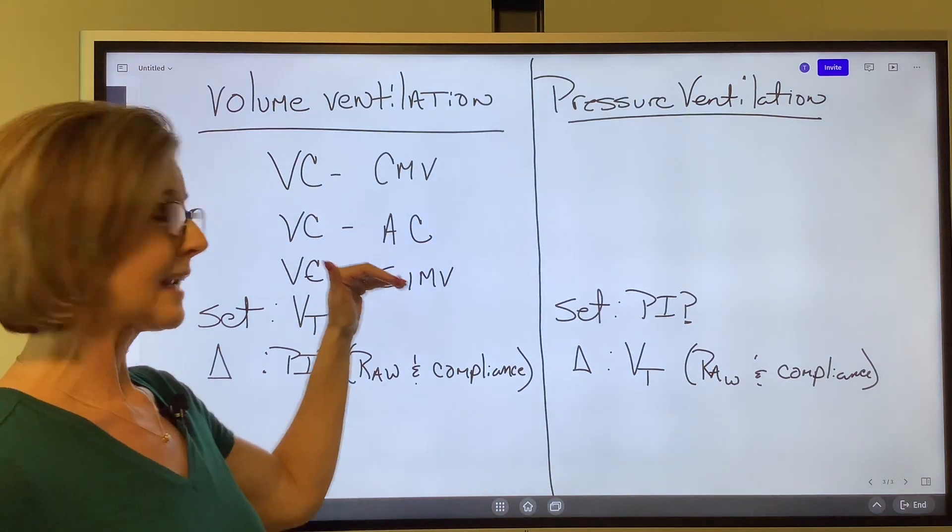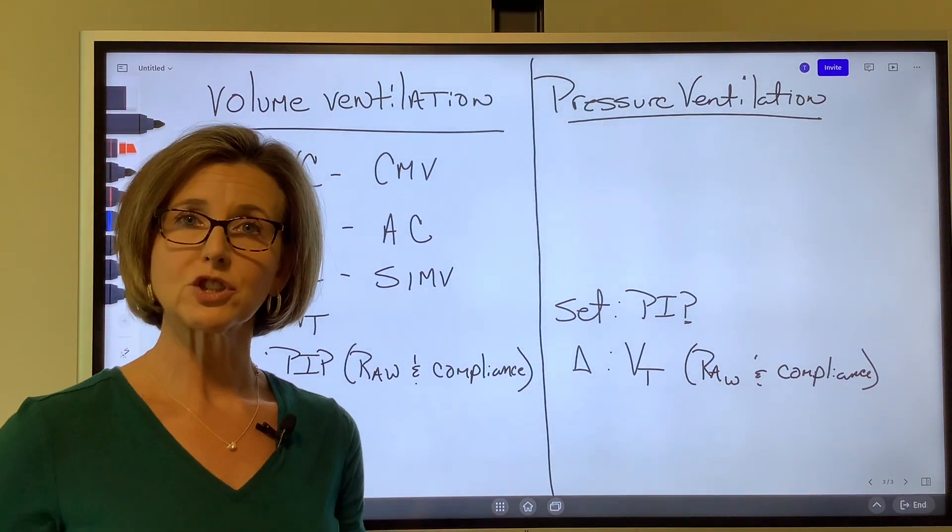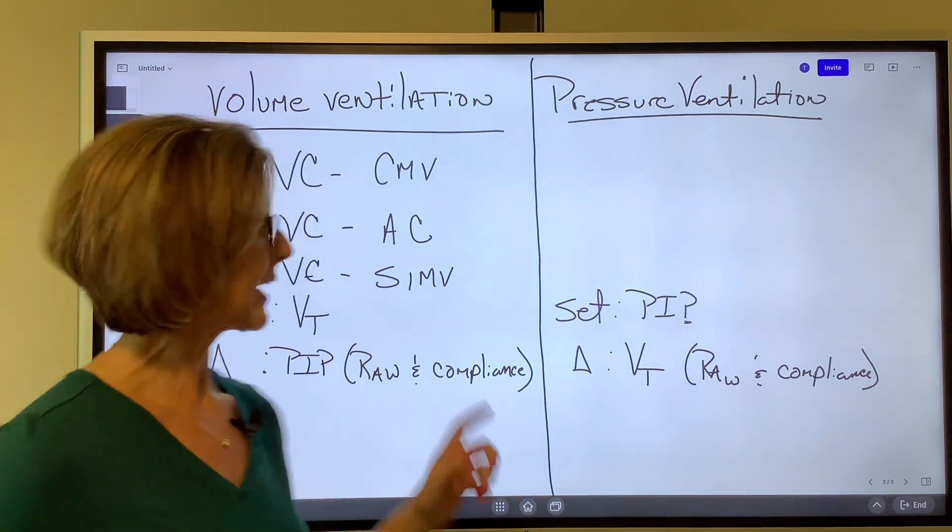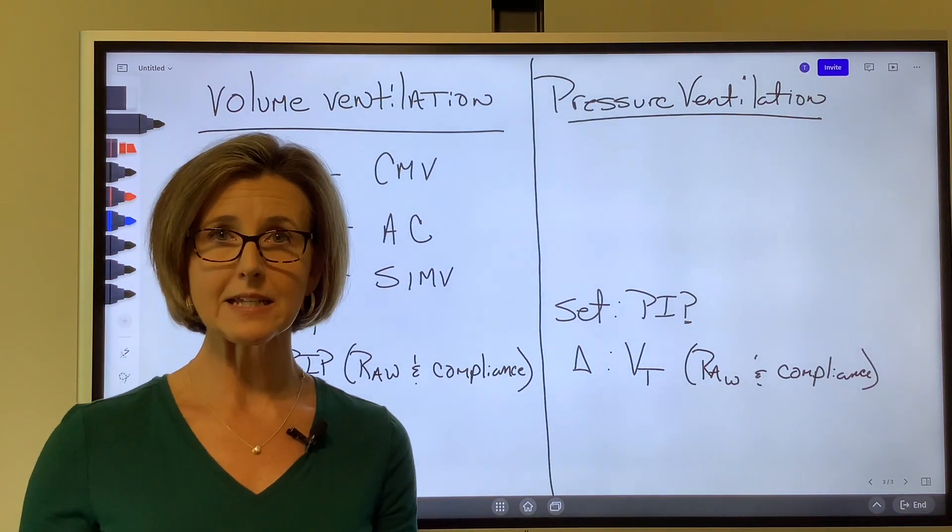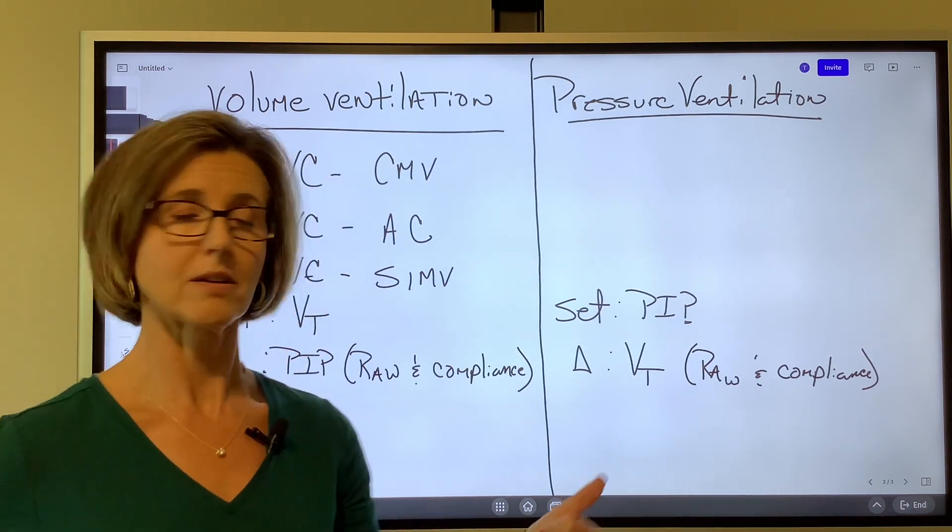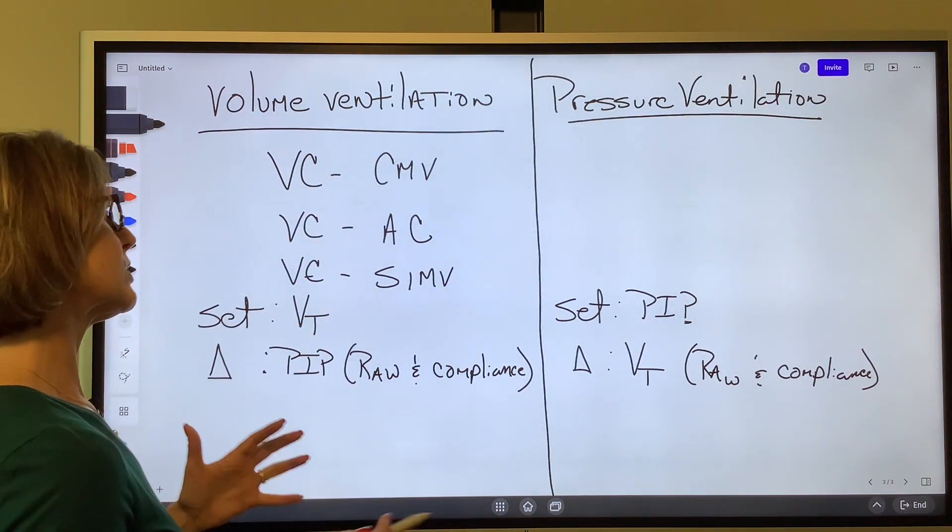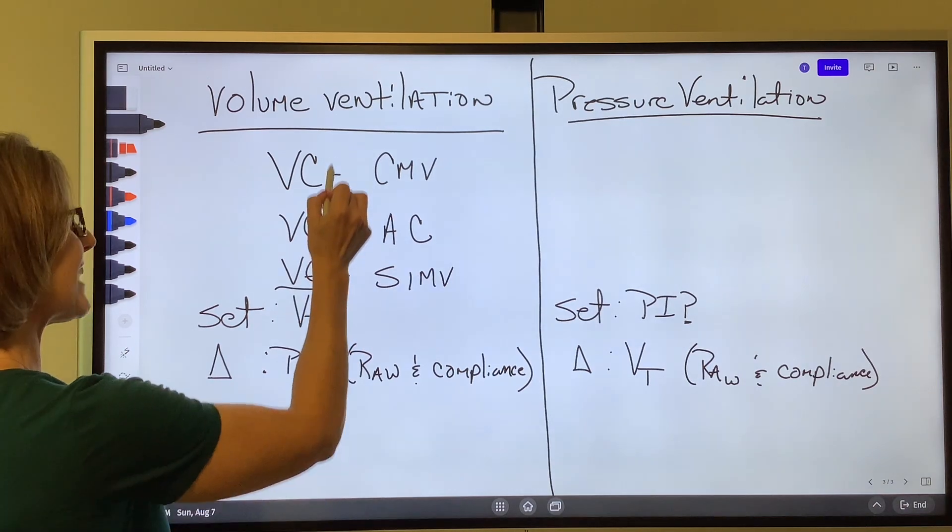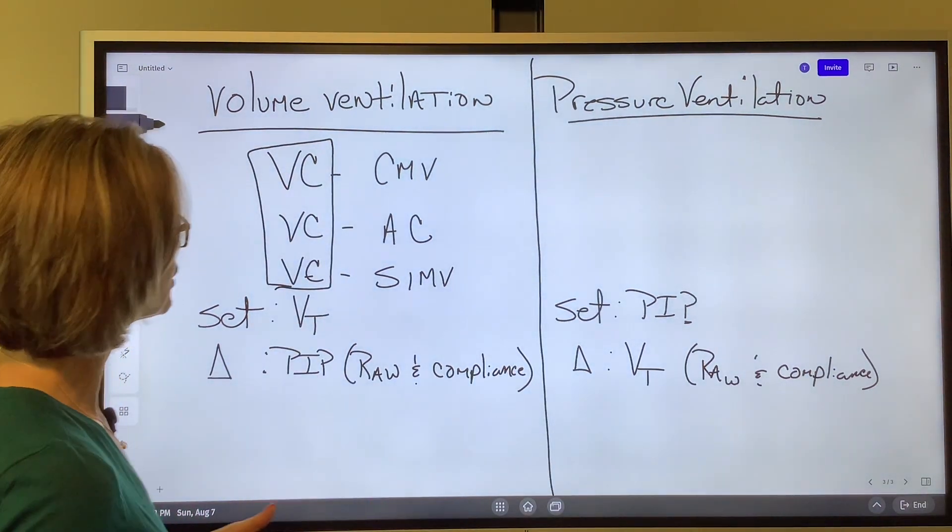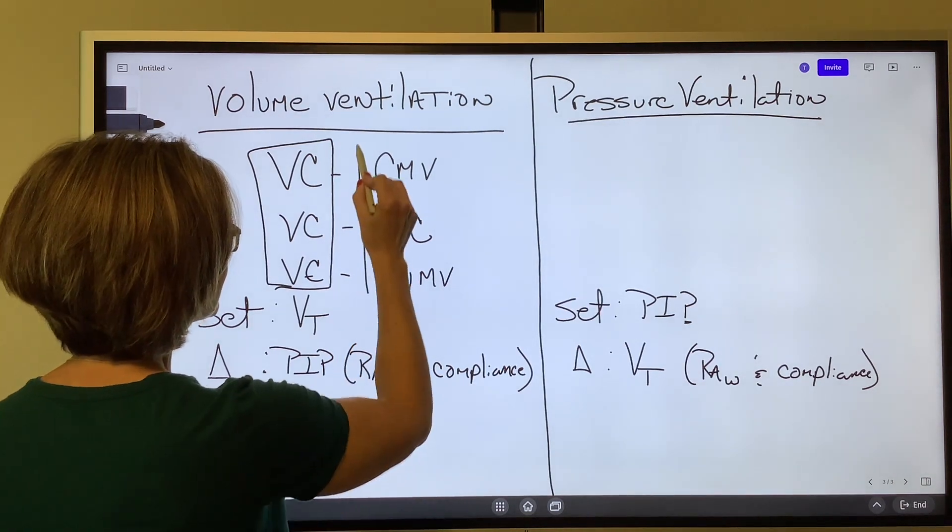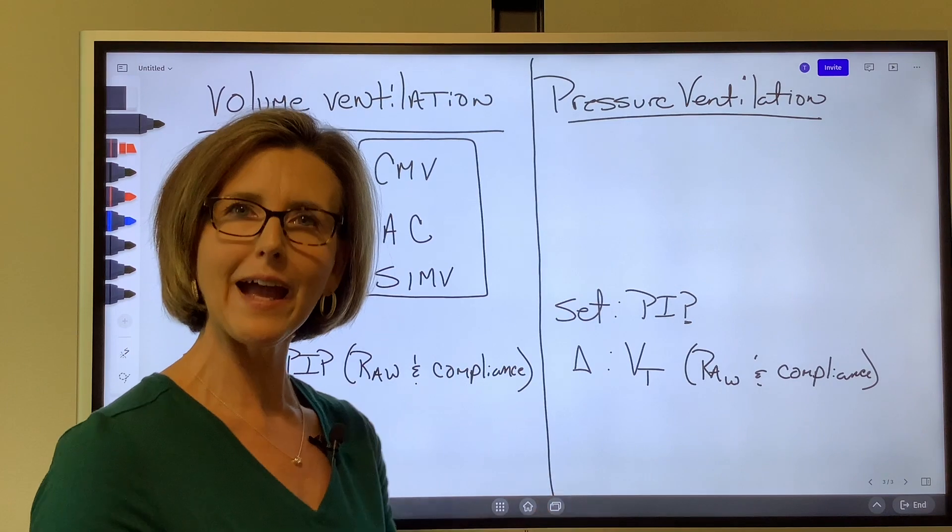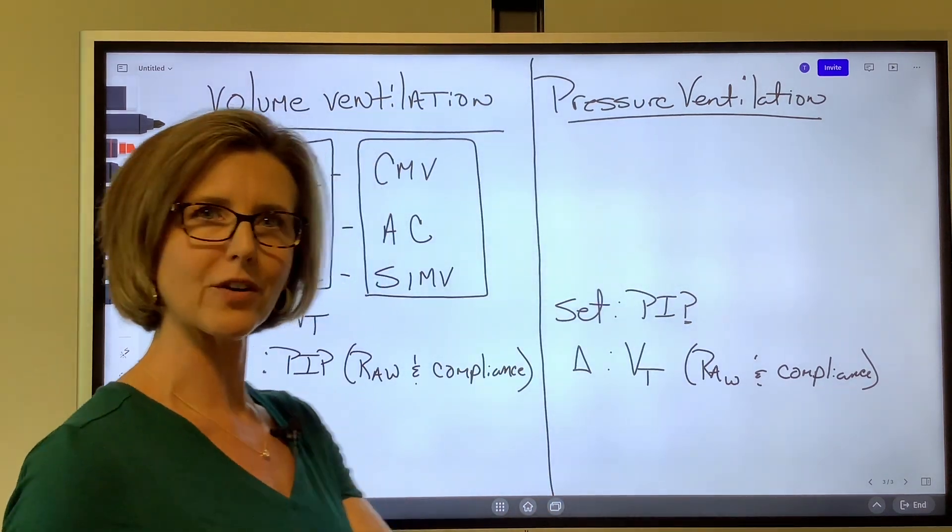All right. And then in SIMV, we allow the patient to have even more ownership in the work to breathe. The patient can start breathing spontaneously between set machine breaths. So really what we're doing is this is just the type of ventilation. So VC means volume ventilation. And this is how we allow the patient to interact with the ventilator.